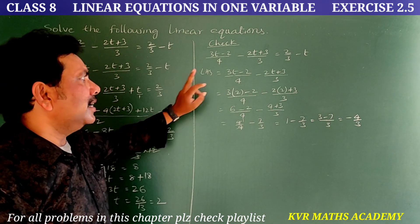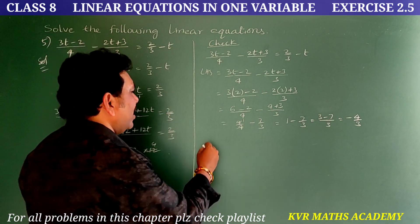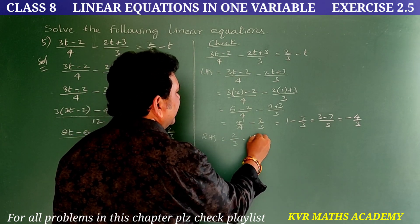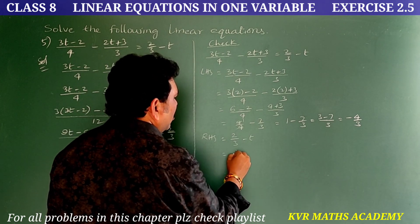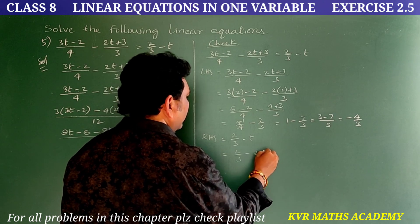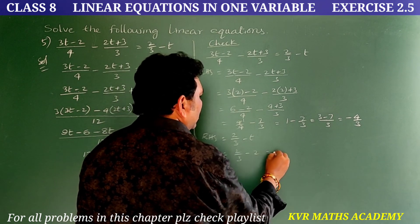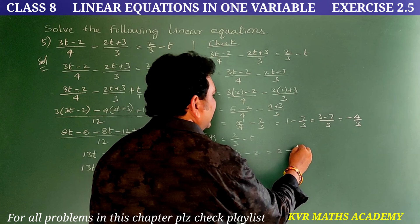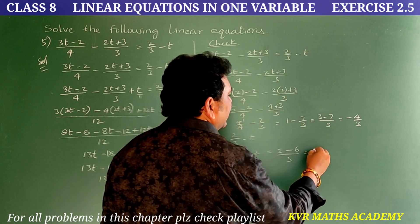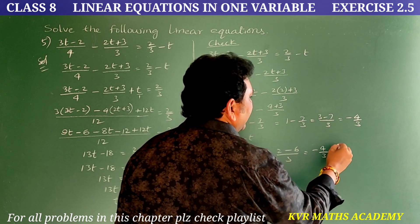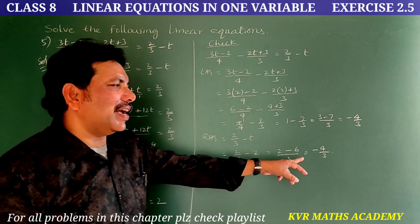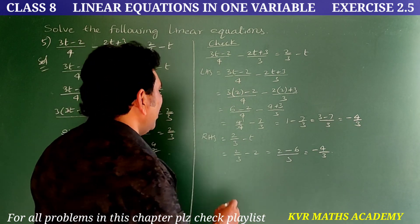RHS = 2/3 - t = 2/3 - 2. Converting: 2/3 - 6/3 = -4/3. So RHS = -4/3. LHS = RHS = -4/3, both are equal.